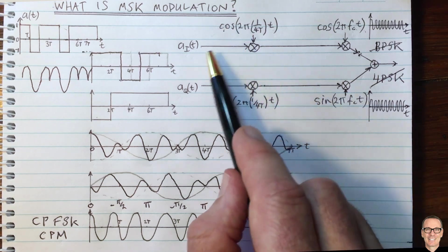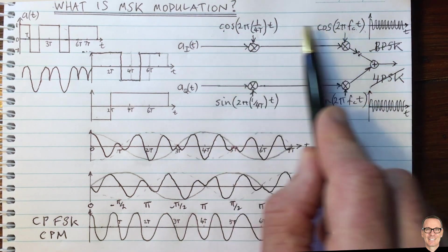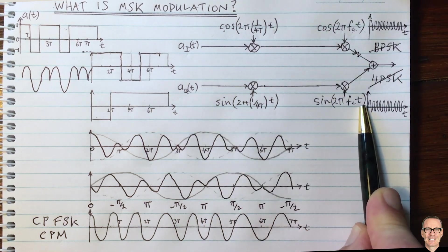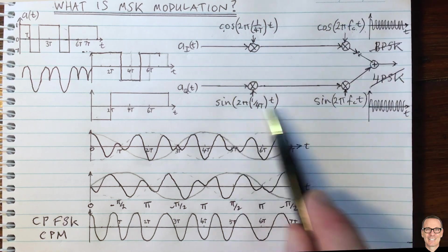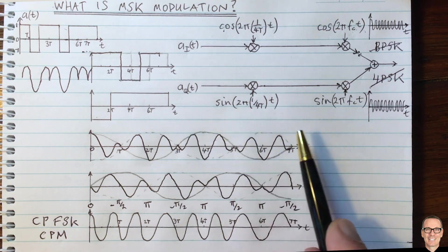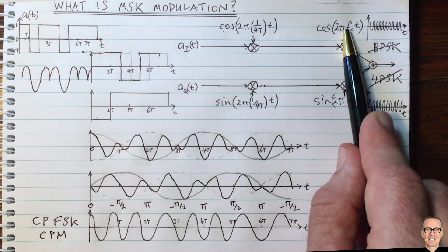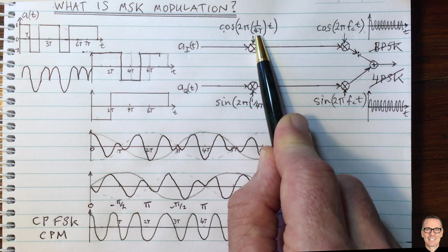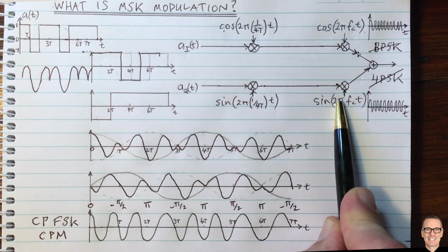To see this mathematically, you can rewrite the equation: take A_I(t) times cosine times cosine plus A_Q(t) times sine times sine, rearrange using trigonometric identities, and you can show it equals a single sinusoid with frequency either F_C + 1/(4T) or F_C - 1/(4T). That derivation can be looked up for the full equation.